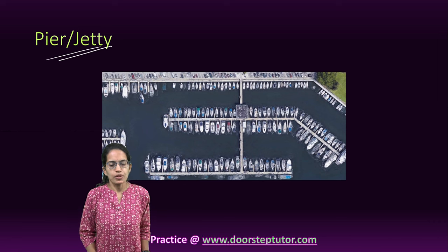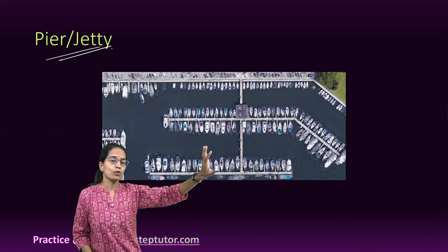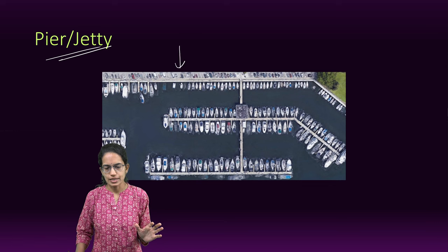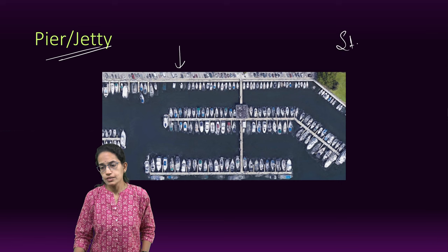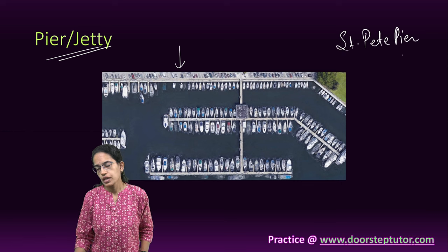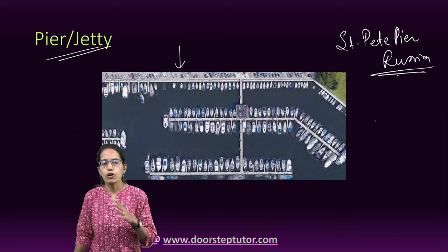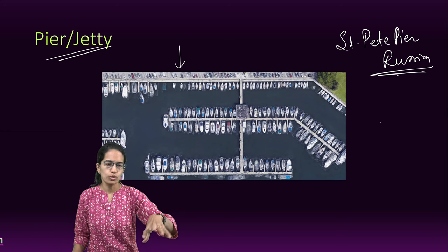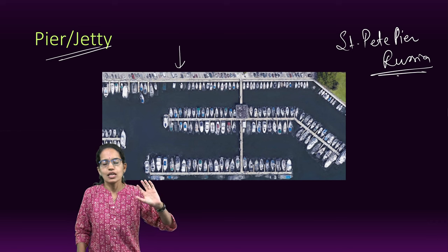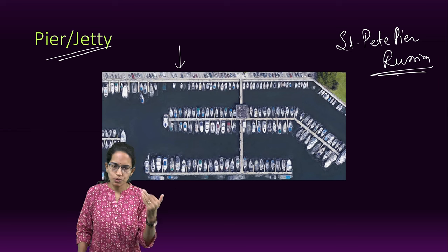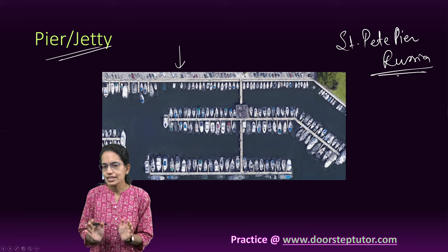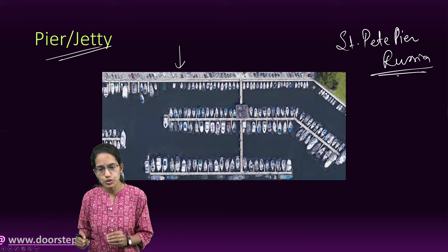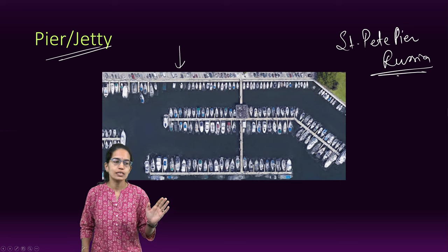The next terms are pier and jetty. When we talk about large ships, we talk about ports and terminals. But what about small boats? Small boats are placed in structures like piers or jetties, which could be for private recreational purposes. Saint Petersburg in Russia is an example of a pier or jetty where numerous small boats are aligned. These could be personal boats owned by individuals, parked in a designated area. In simple terms, a pier or jetty is a parking area for small boats — personal, commercial, recreational, or for tourism — but without heavy loading and unloading of goods.